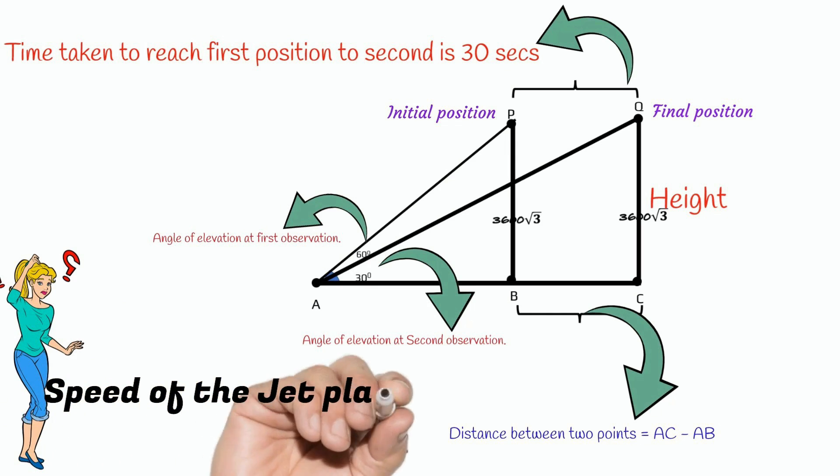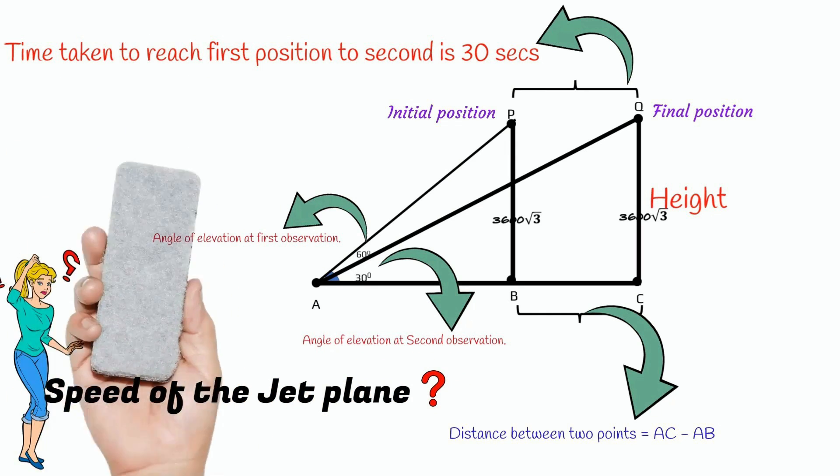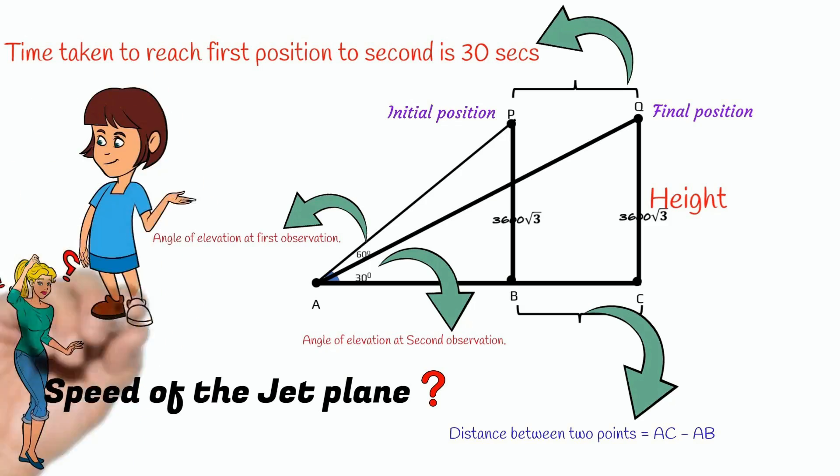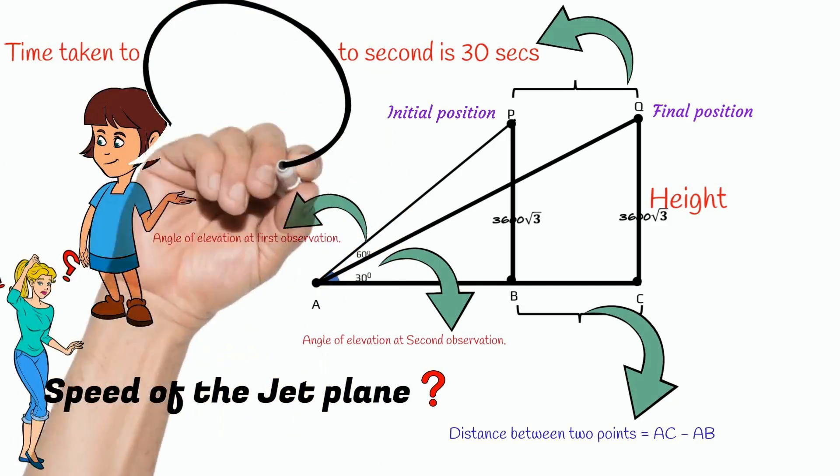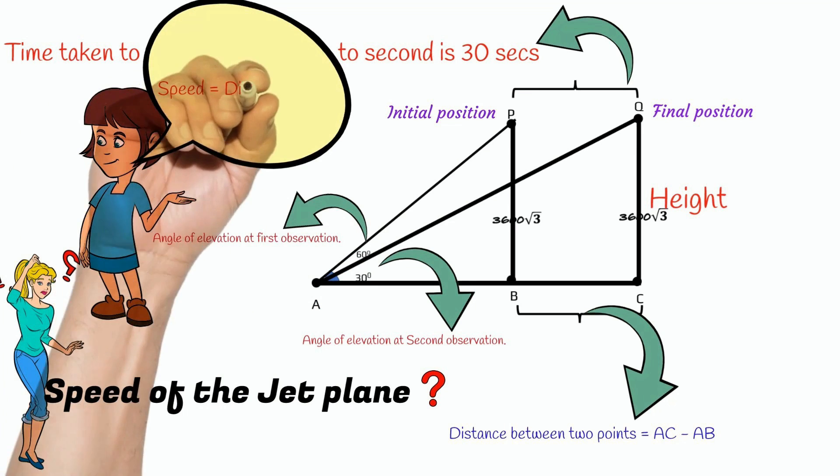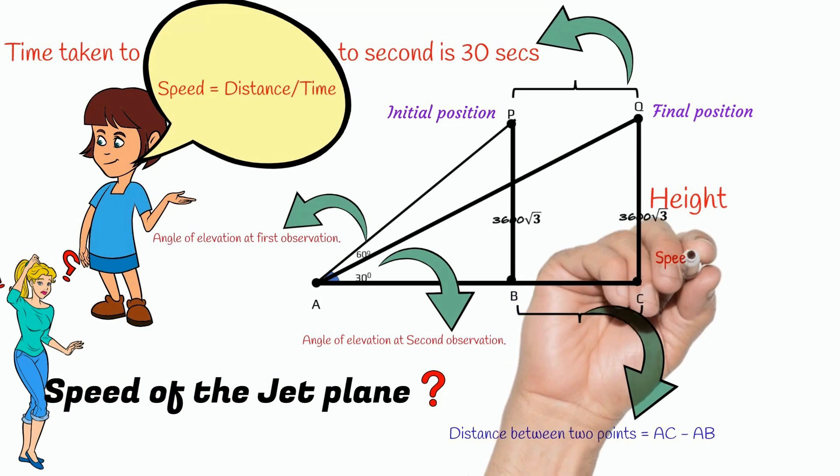How to get the speed of the plane? Speed equals distance divided by time. Speed equals BC divided by 30.